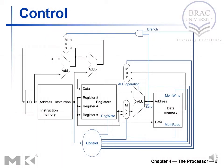This control unit would generate not only the control signal for the multiplexer, but it would also generate control signals for the components based on the instruction type. If you see this diagram, you would see the blue lines generate the control signals for different components.